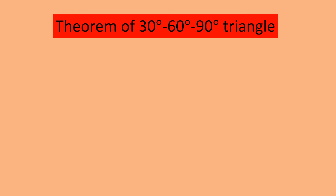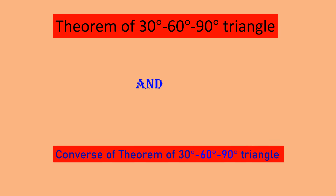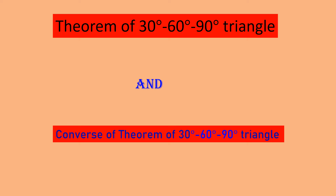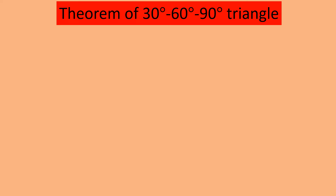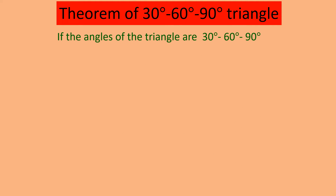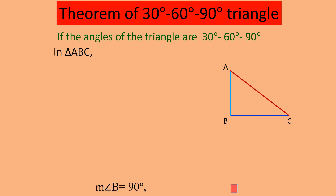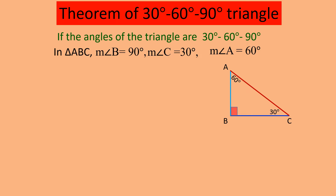Hello friends, let us begin this new video on the theorem of the 30-60-90 degree triangle and the converse of the theorem. If the angles of a triangle are 30 degrees, 60 degrees, and 90 degrees — for example, in triangle ABC, angle B is 90 degrees, angle C is 30 degrees, and angle A is 60 degrees — then we examine what happens.